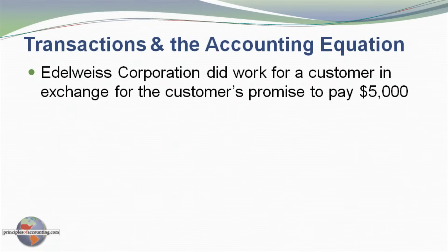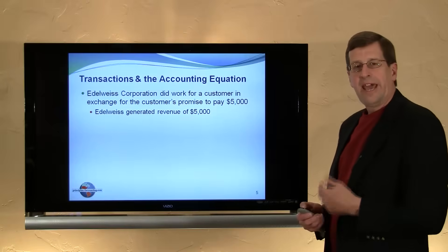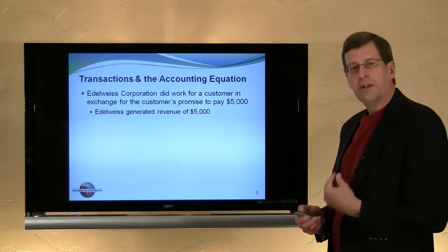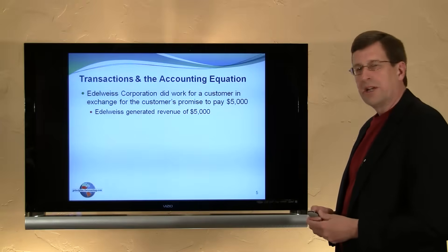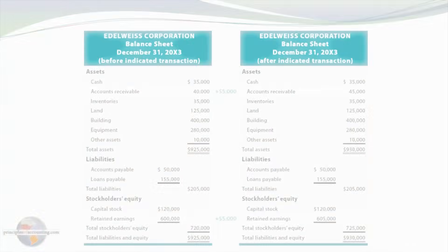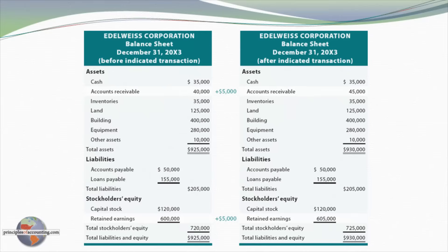Now, Adelweiss Corporation did work for a customer in exchange for the customer's promise to pay $5,000 at a later date. In this case, we say that Adelweiss has generated revenues of $5,000. Revenues are the enhancements or inflows from providing goods and services to customers. Revenues contribute to income, income contributes to retained earnings — part of stockholder's equity. So the net effect on the balance sheet: accounts receivable, which was $40,000,